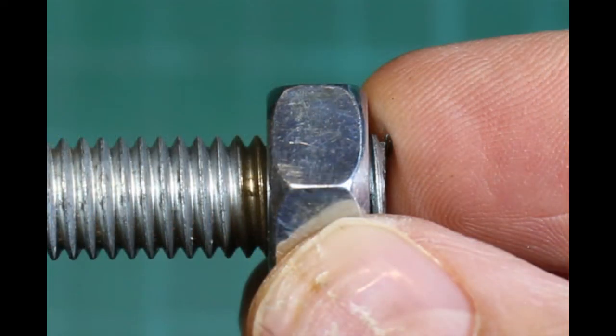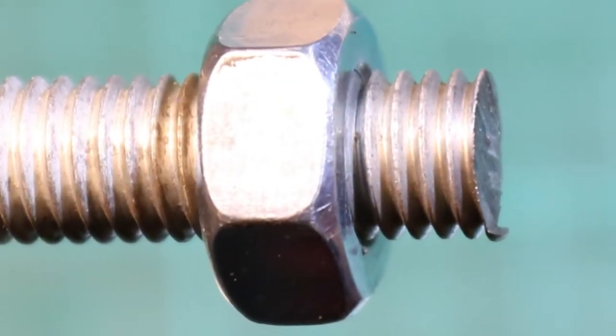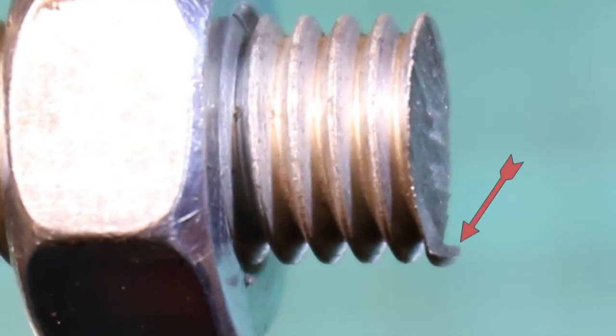If the burr is not removed, that sharp edge will sit there forever, more able to cut or gouge anyone or anything that rubs up against it. Before I show you what I think is the best way to remove the burr from the cut bolt, let's take a closer look at how the burr was formed in the first place.